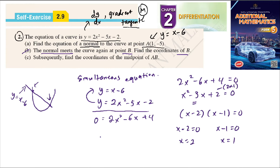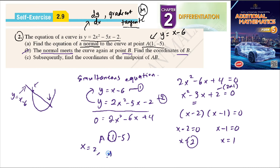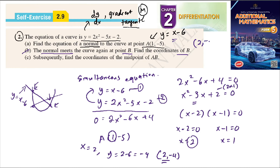We know point A is (1, -5), so x = 1 corresponds to point A. Therefore the other point B has x = 2. Substituting x = 2 into the normal equation y = x - 6: y = 2 - 6 = -4. So the coordinates of point B are (2, -4).